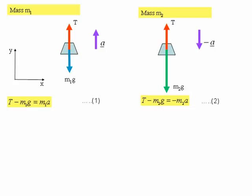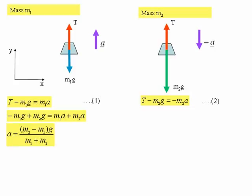We now subtract equation two from equation one, which gives us: minus m1g plus m2g equals m1a plus m2a. Transposing that equation gives us the expression for the acceleration, which is (m2 minus m1)g divided by (m1 plus m2).